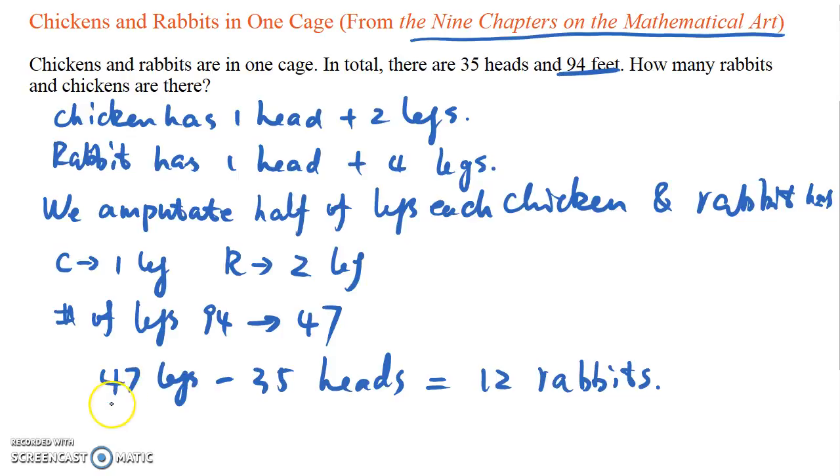But now we have more legs than heads. So the difference between the number of legs and the number of heads must be the number of rabbits, because each rabbit has two legs instead of one. So the number of rabbits equals 12.